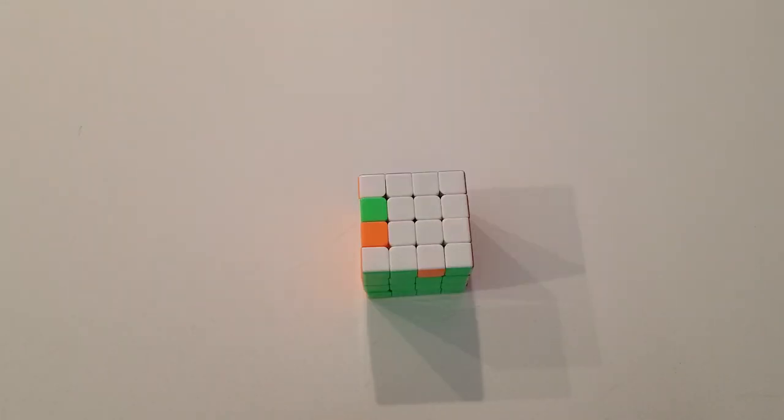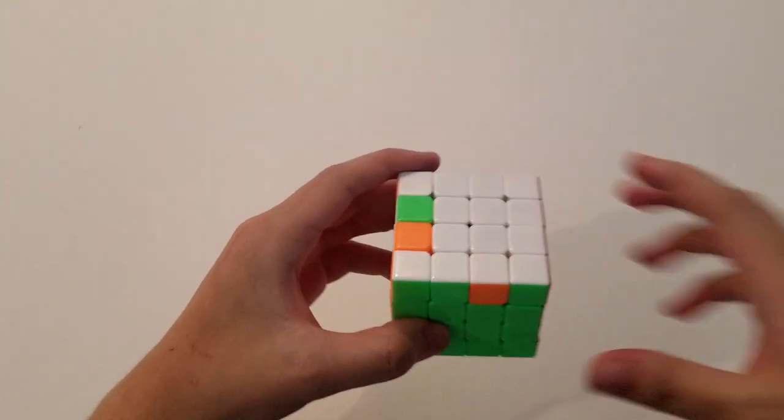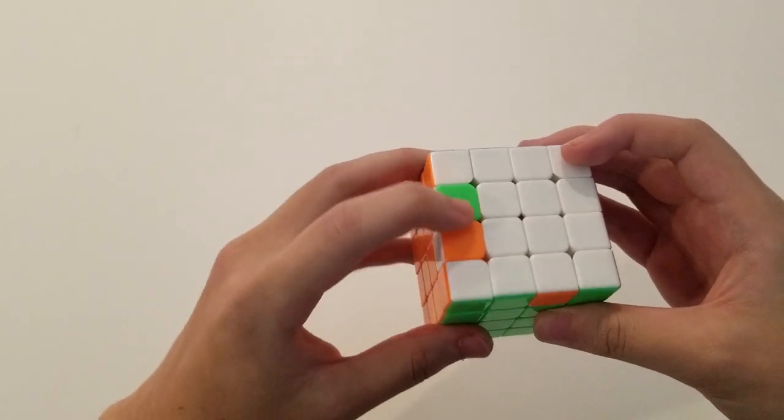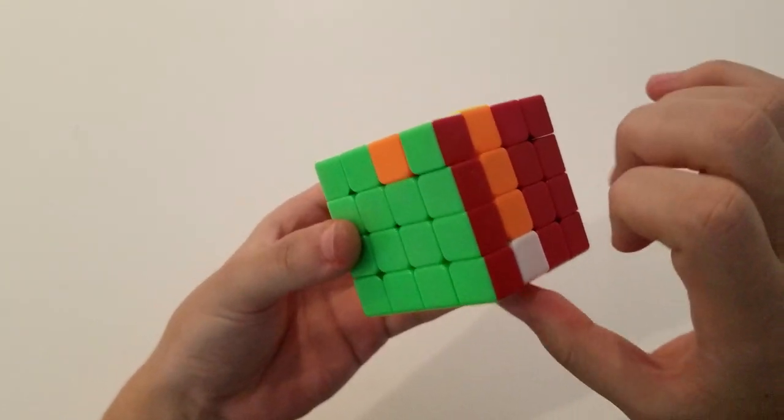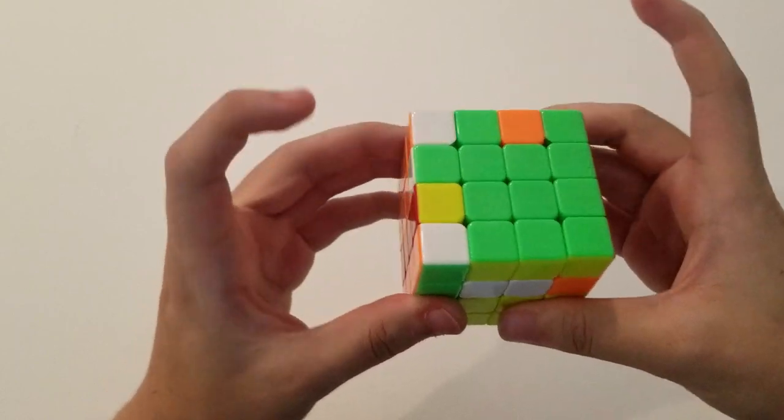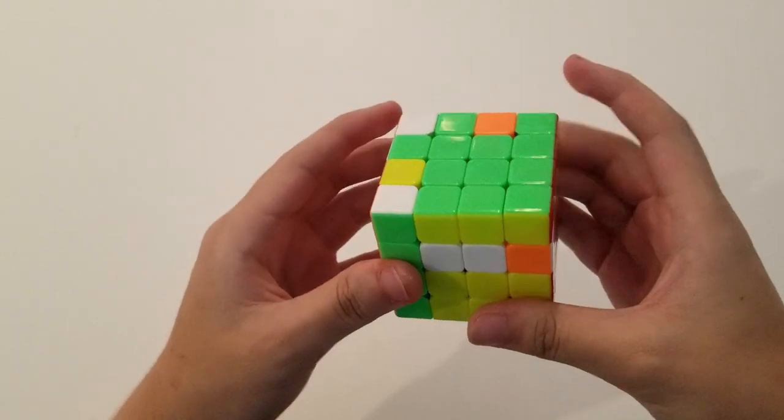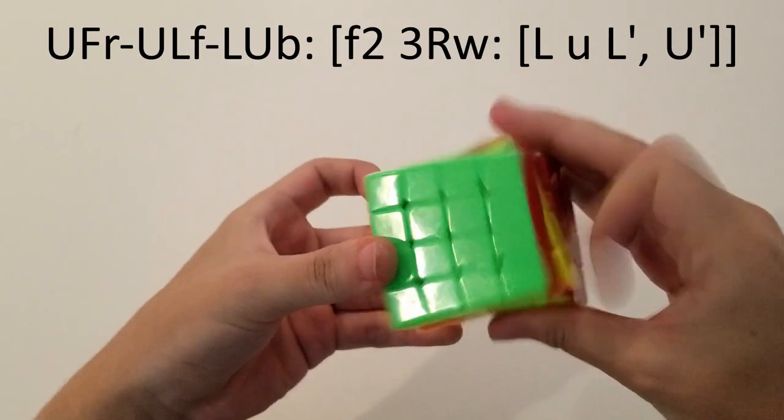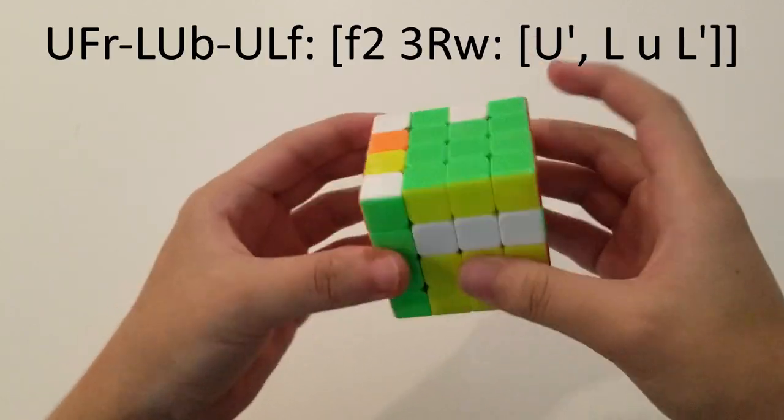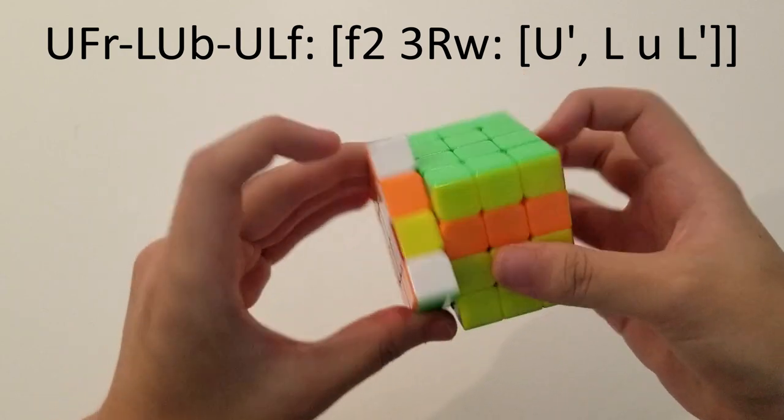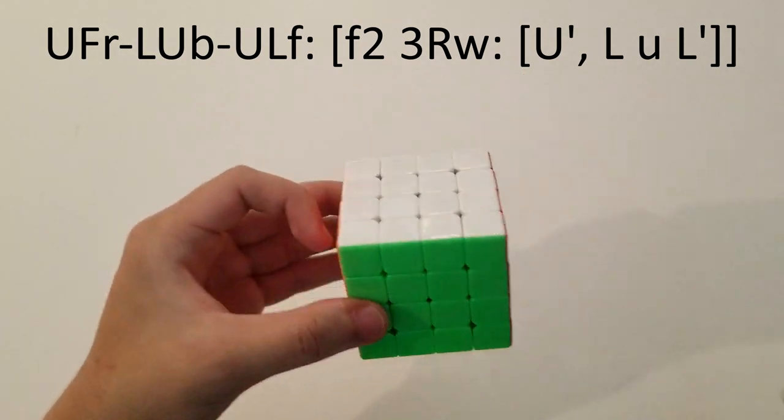This case looks like it should be pretty similar to the previous one, but it actually isn't. What we're going to do, we have these pieces in UL right here, is an F-2 slice to bring this down here, R-wide sets up these two here, and now we have an 8-mover like this. So, that's what it looks like done fast. Inverse is the same way, we have that, and the 8-mover, and this cancels a little bit.